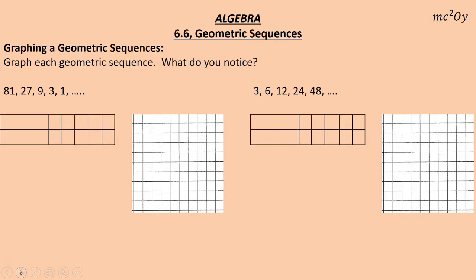Let's go ahead and graph these sequences. Generally what you're doing when you graph them is looking at a position — which we call n — and that position gives you a term, which we call a sub n.